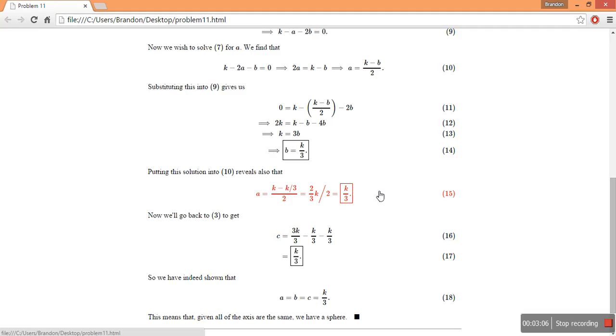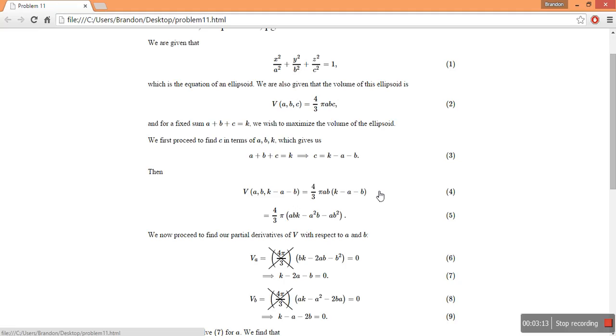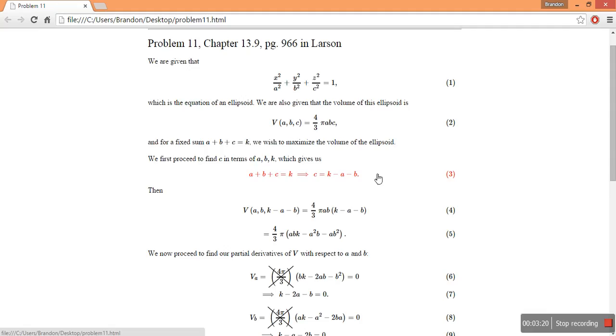So now we know what a and b are. We know that a and b are both k on 3. But we said above that c in terms of k, a, and b is number 3 here. C equals to k minus a minus b. That's the relation.